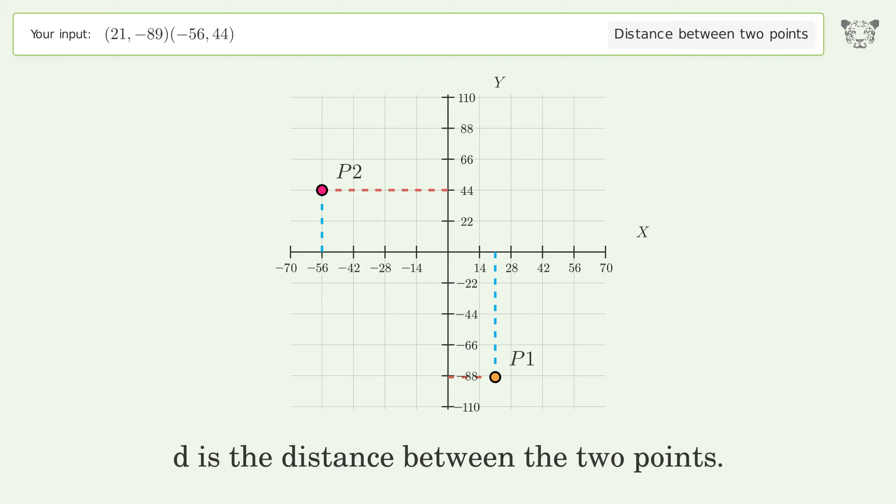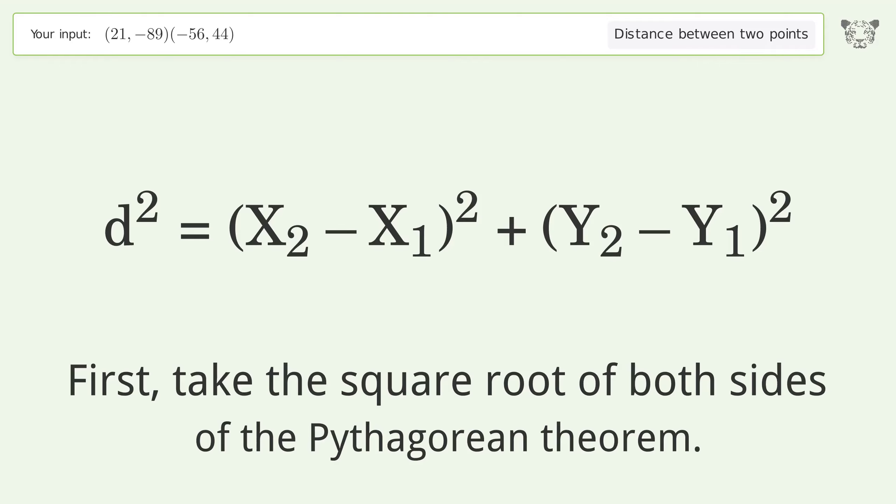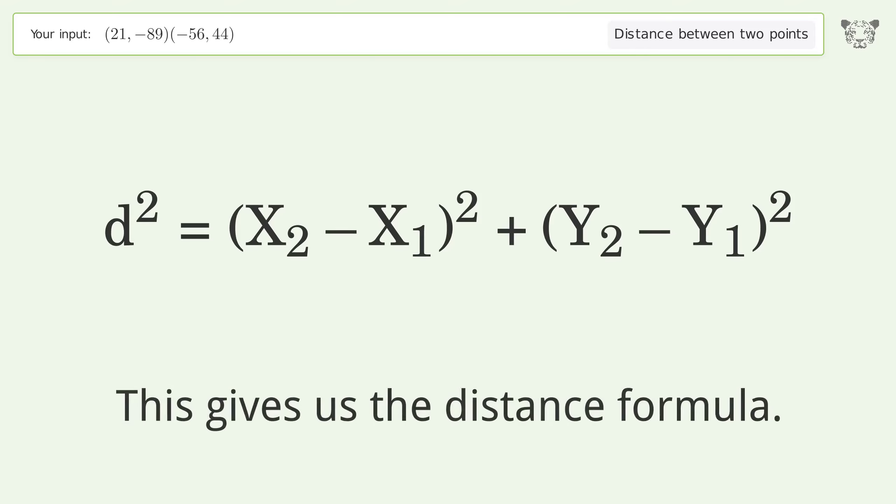d is the distance between the two points. First, take the square root of both sides of the Pythagorean theorem. This gives us the distance formula.